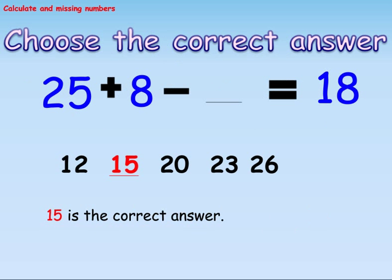Choose the correct answer: 25 plus 8 minus dash equals 18. The options are 12, 15, 20, 23, and 26. Here, 15 is the correct answer.